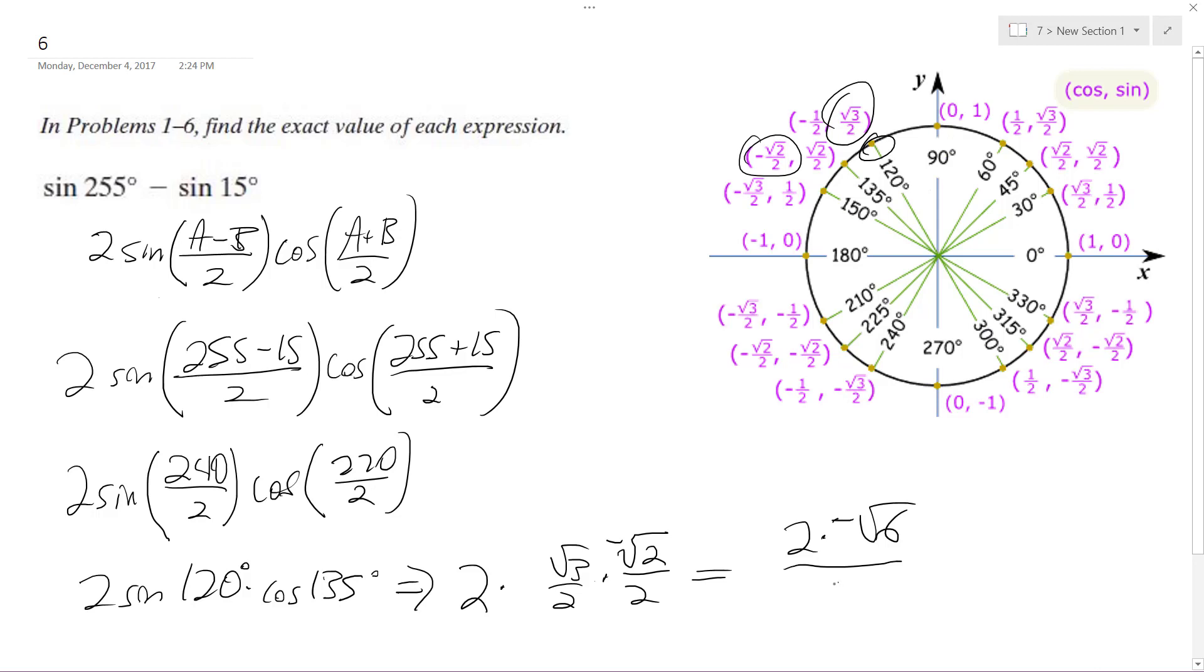Or excuse me, over 4. And we just cancel that, and we end up with negative root 6 over 2.